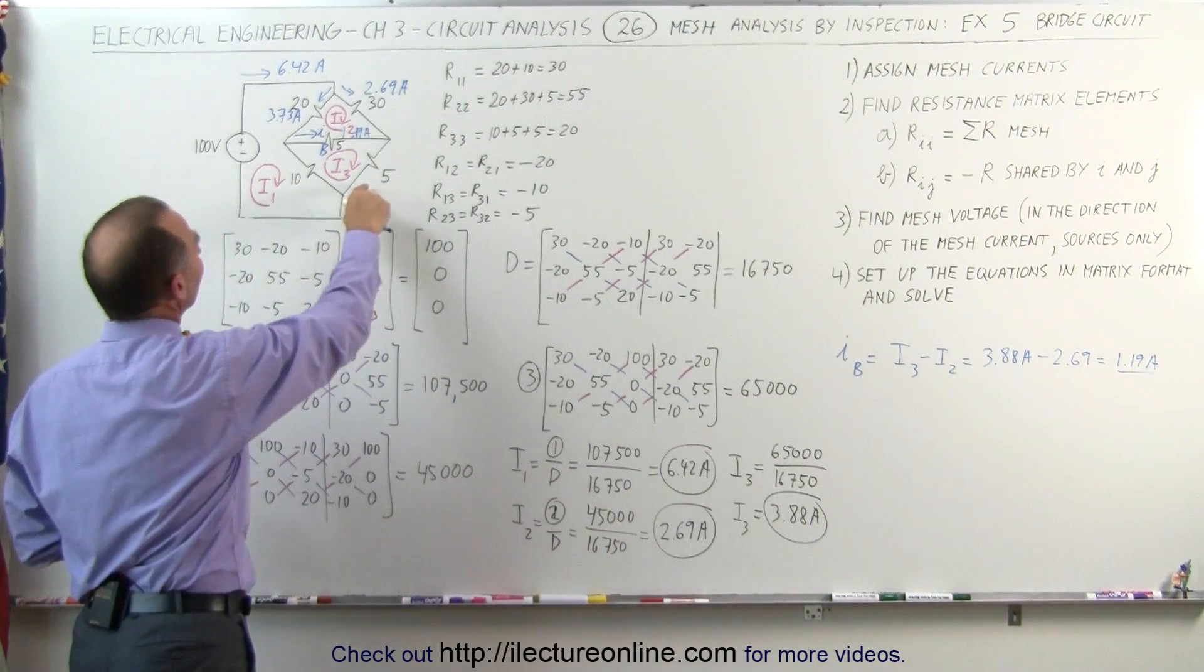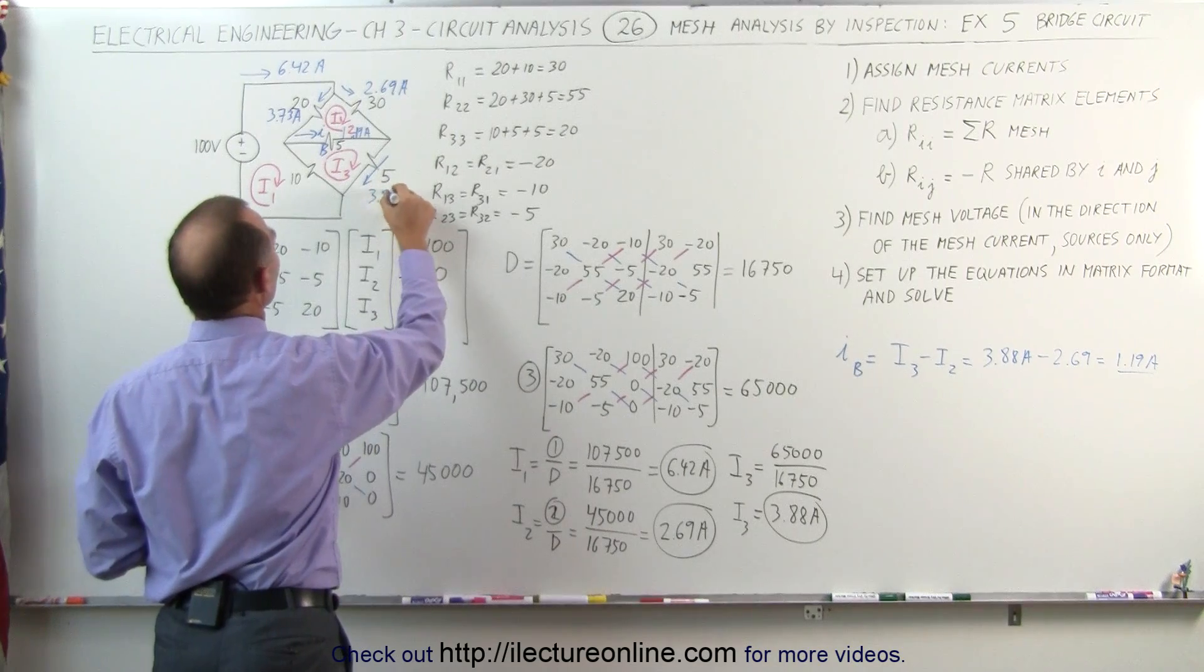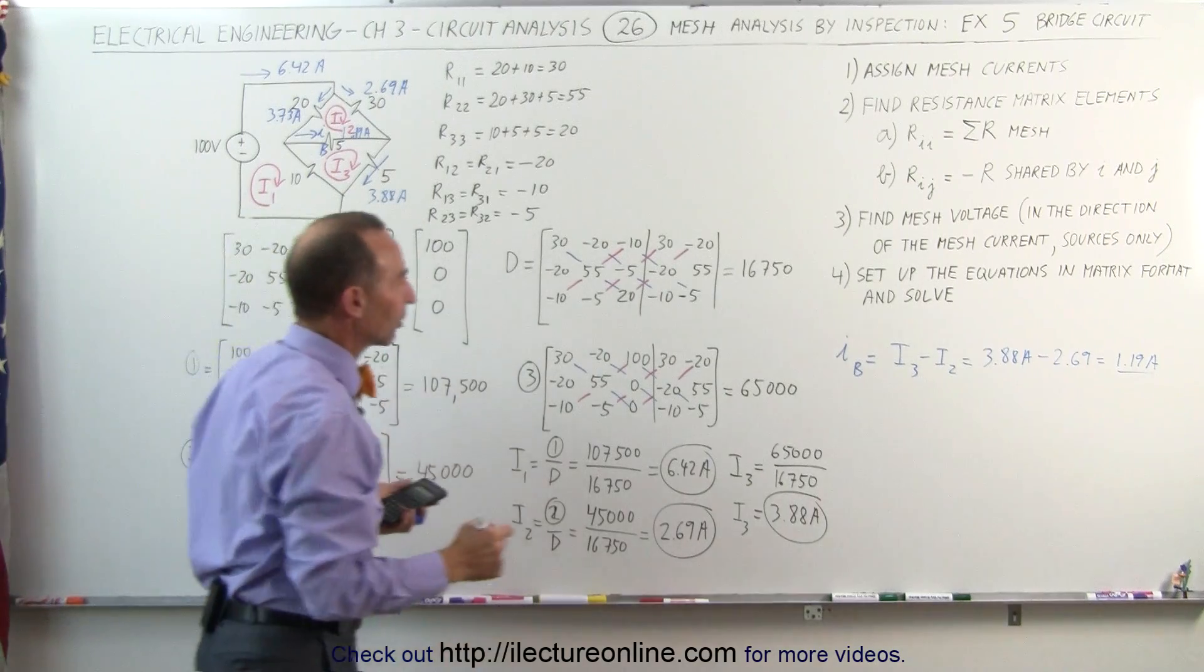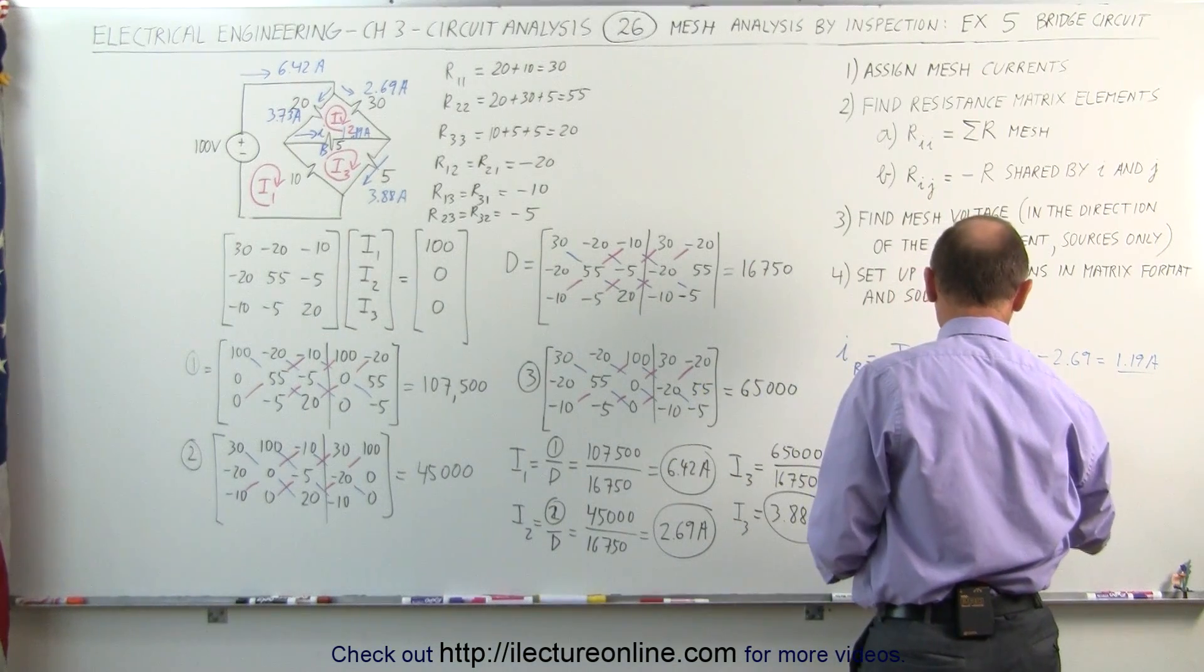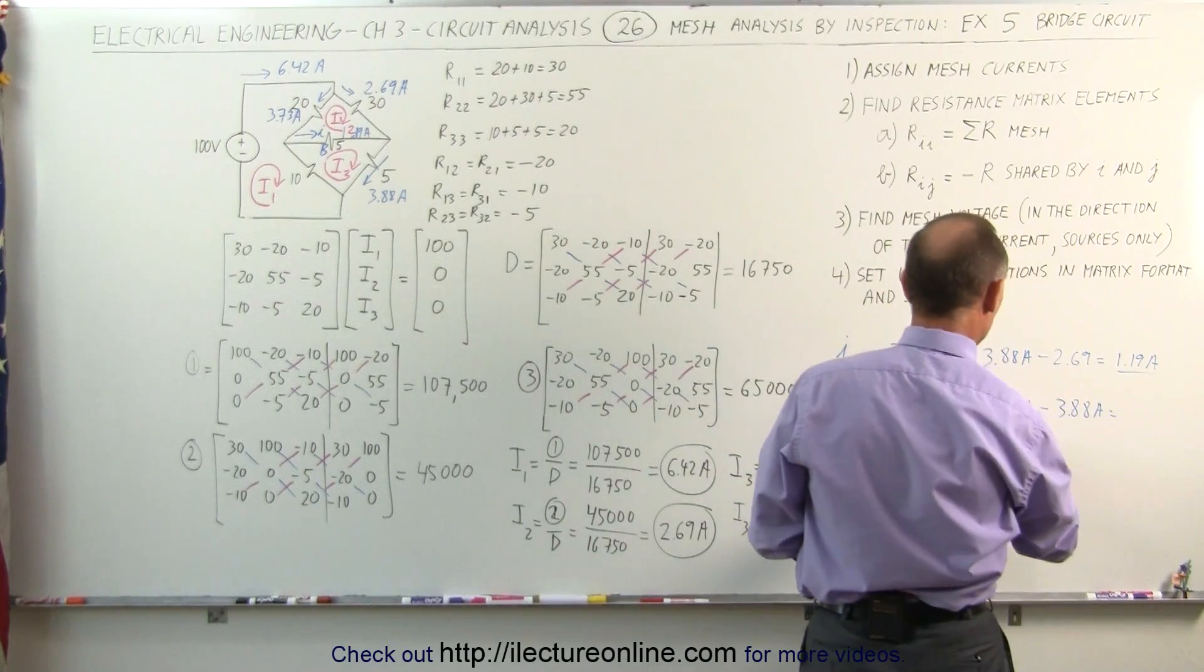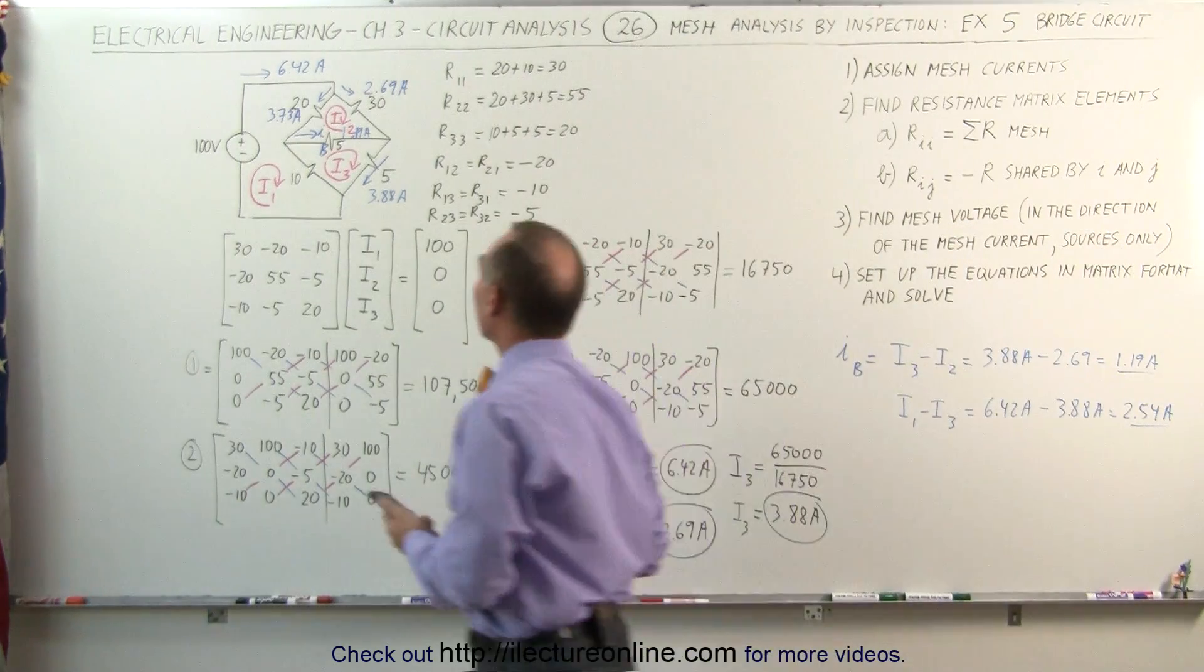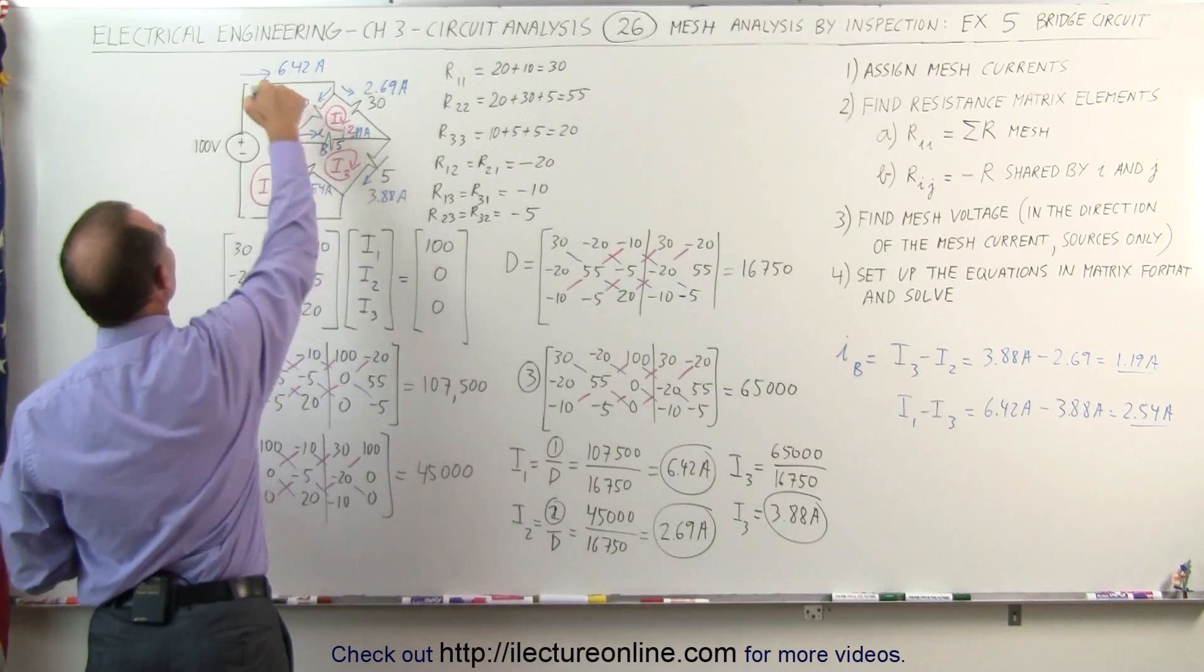And then finally we have I3 in this direction. I3 has 3.88 amps of current. But here, across the 10 ohm resistor, notice that we have the I1 in this direction, but I3 in the opposite direction. So this current will be I1 minus I3. I1 is equal to 6.42 amps. And subtract from that I3, which is 3.88 amps. Which is equal to, let's just calculate it, 6.42 minus 3.88. Finally here we have 2.54 amps. Then when you add this to this together, 2.54 plus 3.88 should add it back to 6.42.